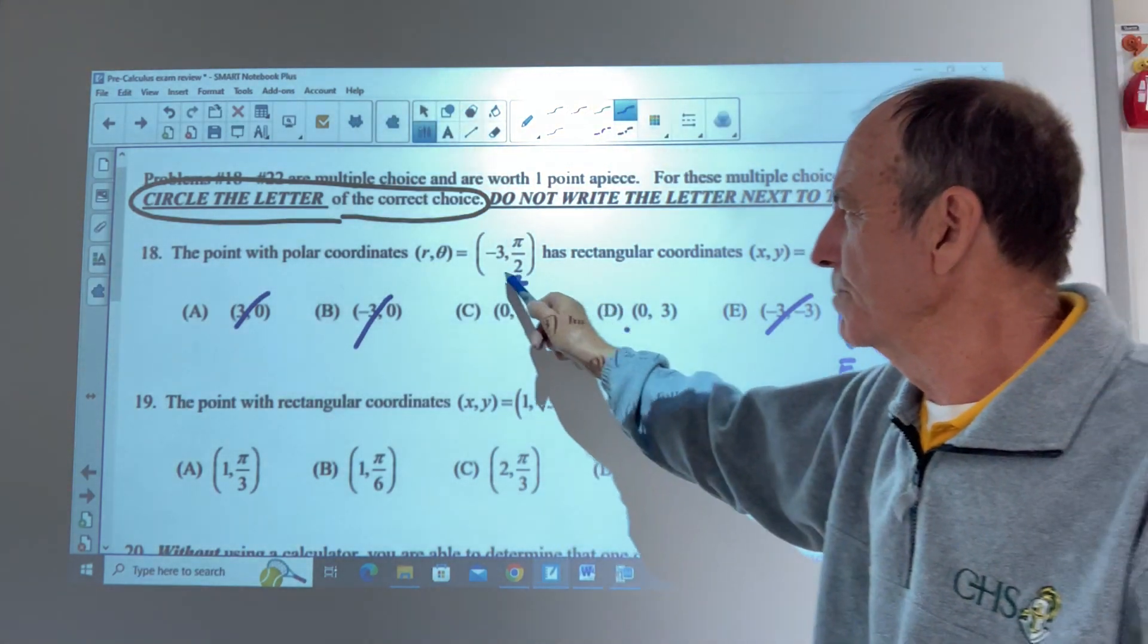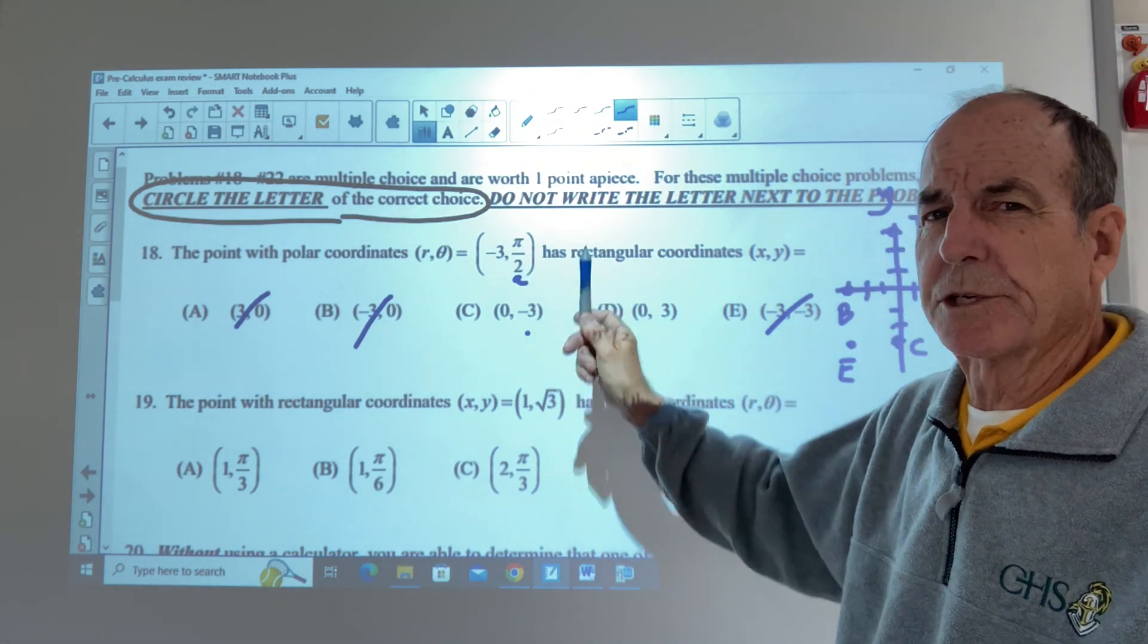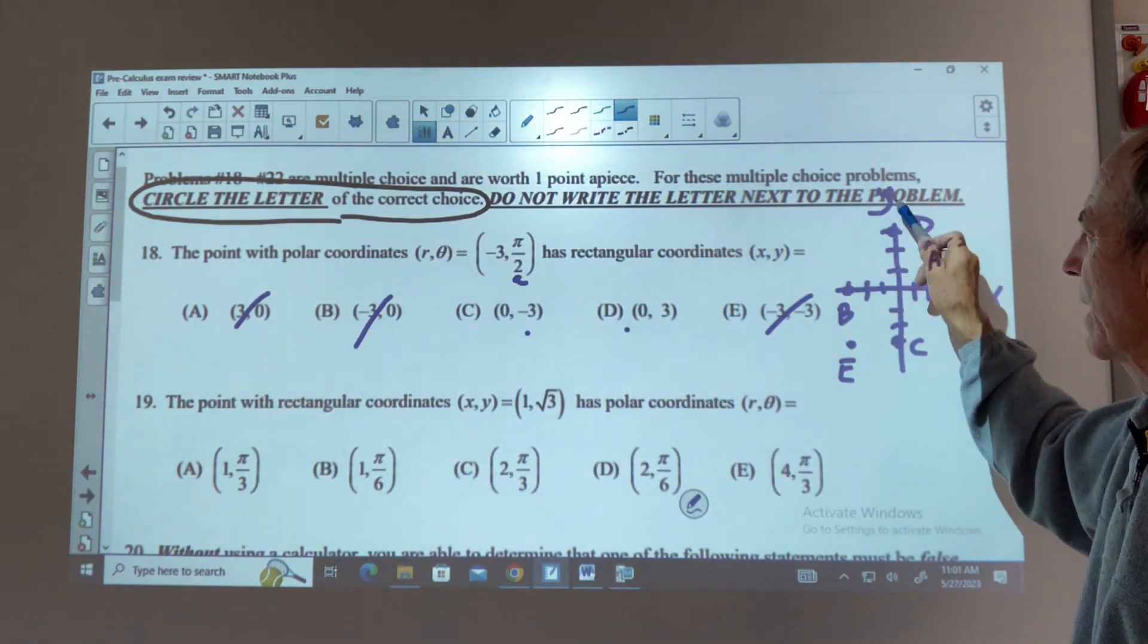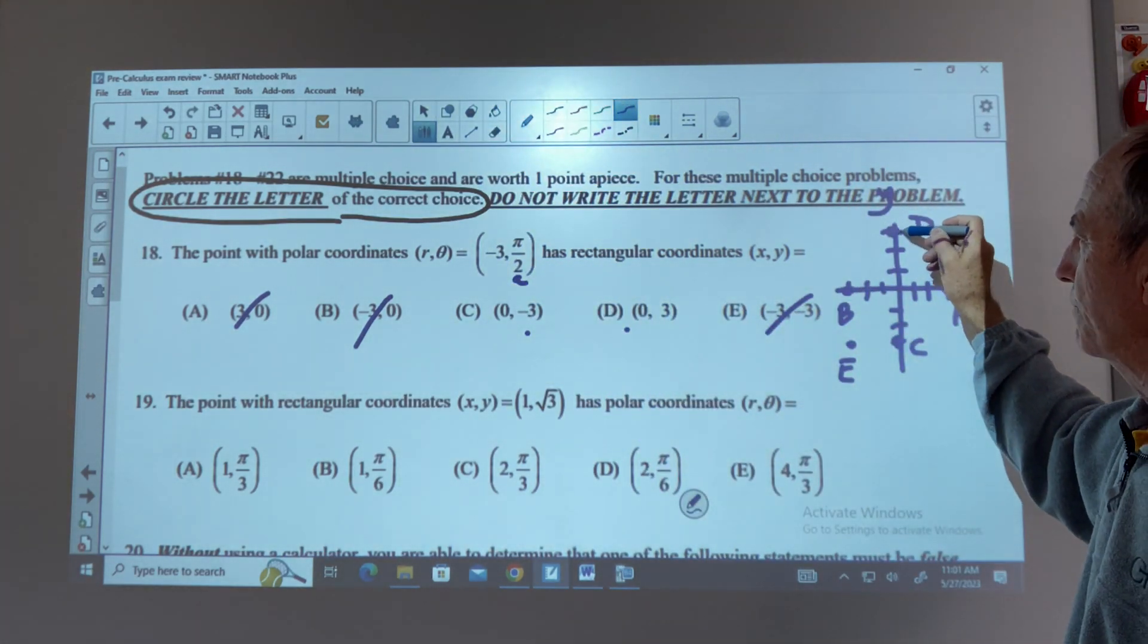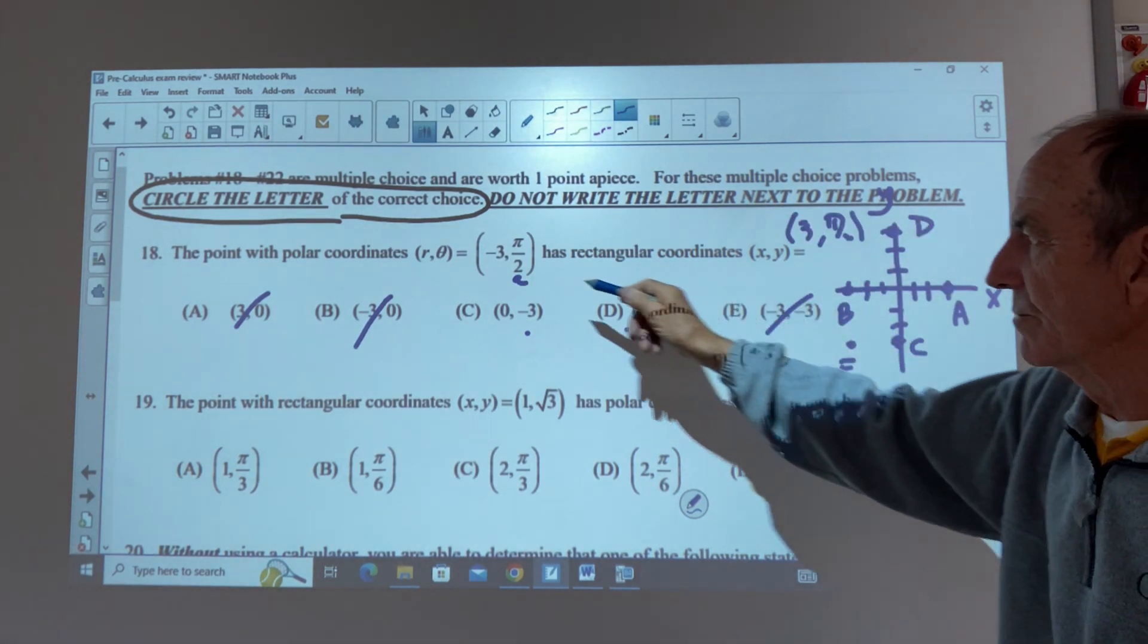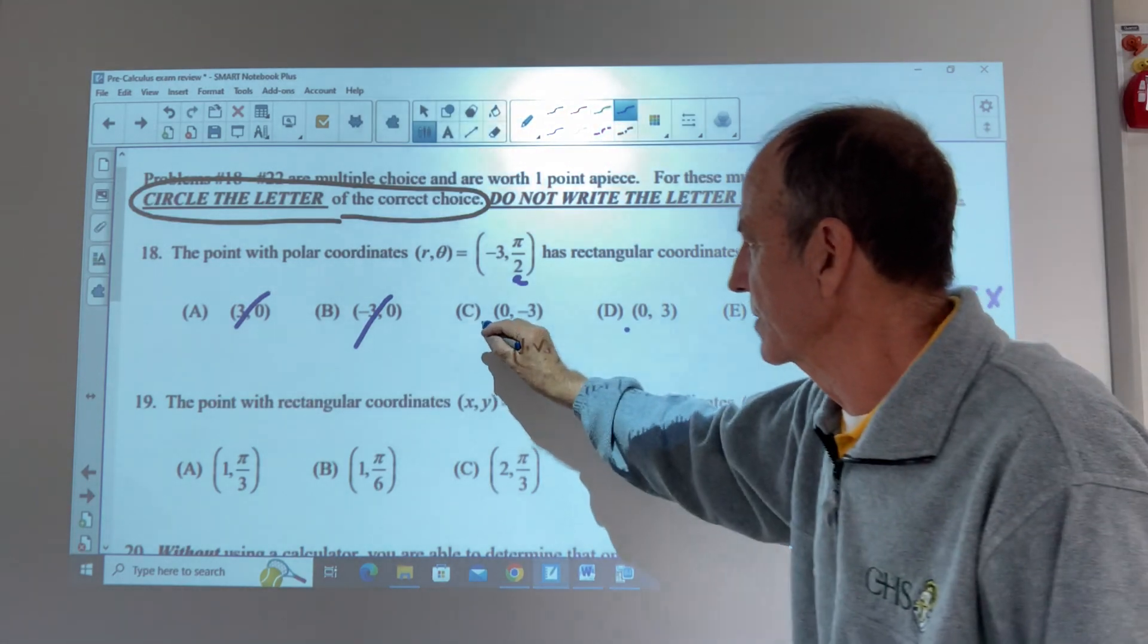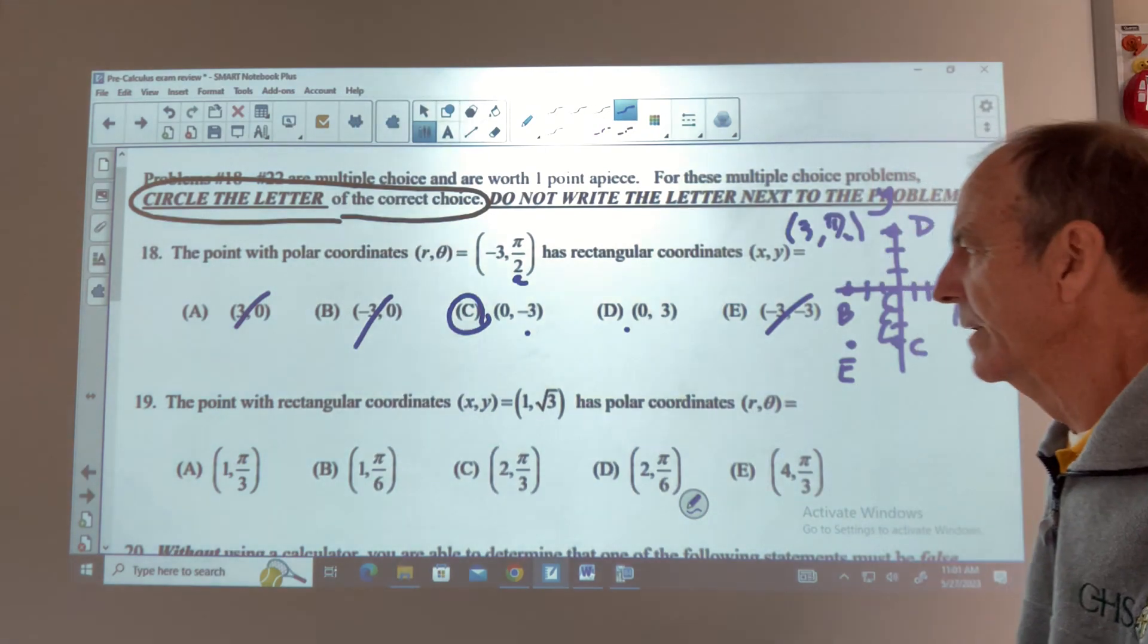Which one would correspond to negative 3 pi over 2? Well, if you recall, the angle gives us the direction we're going. And the r value tells us how far to go. This says we're pointing in pi over 2, but we're not stepping three units. If we were up here, the r value would be 3. The negative 3 indicates we're actually backing up. So we're facing that way, but we're walking backwards. And we end up here. This is the correct answer. Sort of a challenging problem. But it's one point out of 120.